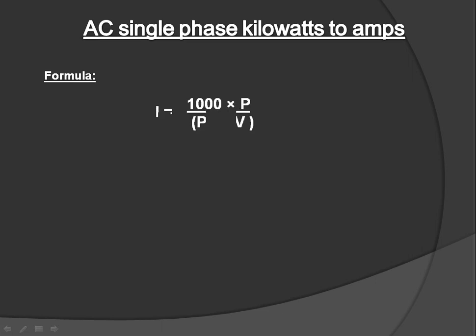The formula is I equals 1000 multiplied by P, divided by PF times V. Let's see an example.